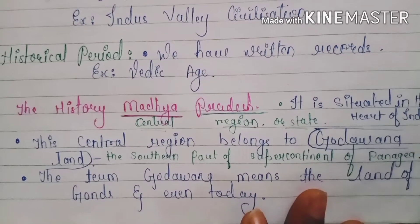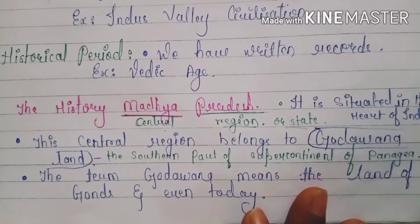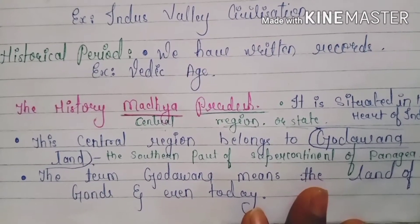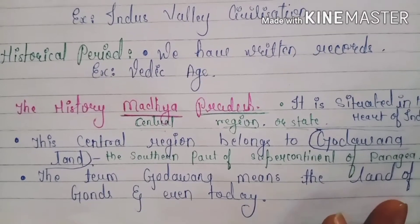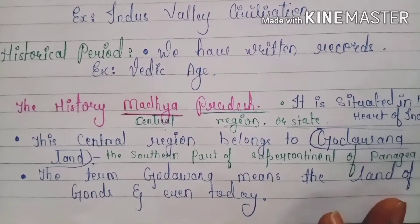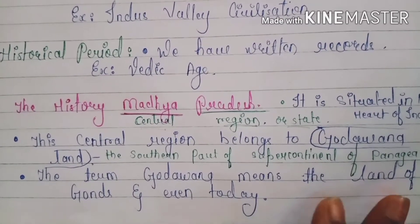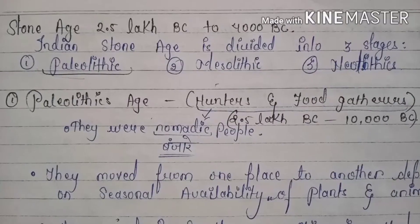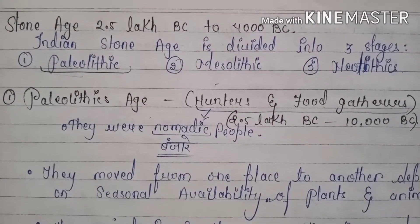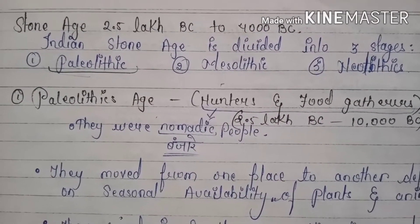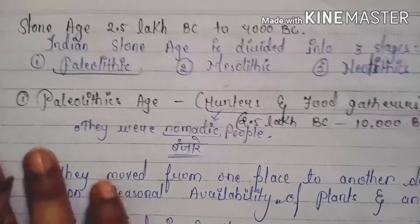Gondwana land is the southern part of the supercontinent Pangea. The term Gondwana means 'land of Gonds,' and even today we refer to this region as Gonds. The Stone Age dates back to around 5,00,000 BC.